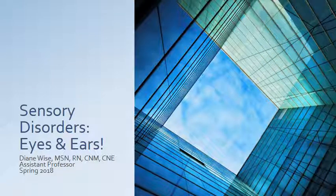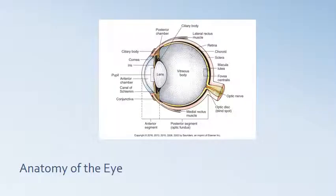This particular set of PowerPoints and video will be about sensory disorders — common problems of eyes and ears. An image of the anatomy of an eye is included for review of all that takes place in the eye. You can see the vitreous body here; some disorders involve problems with that area, and any area of the eye can be problematic, so we're going to talk about them.